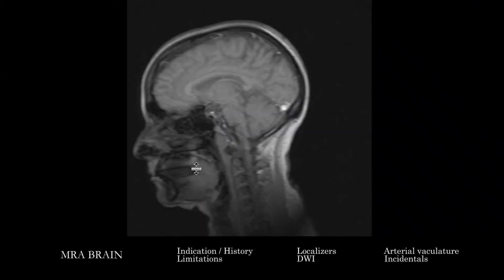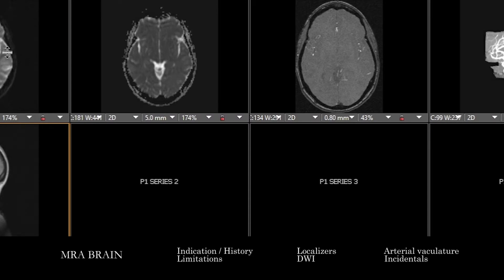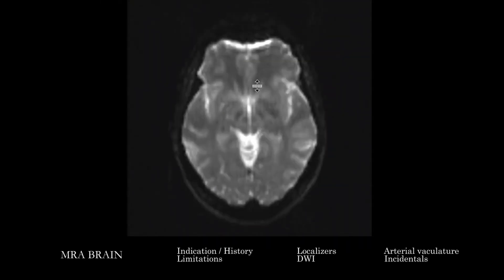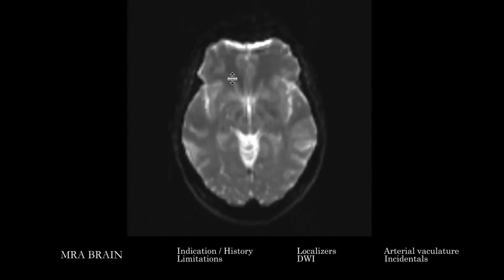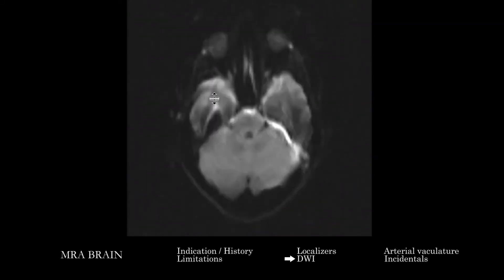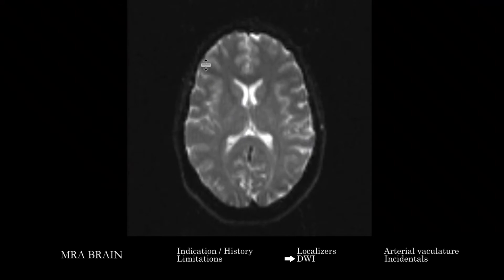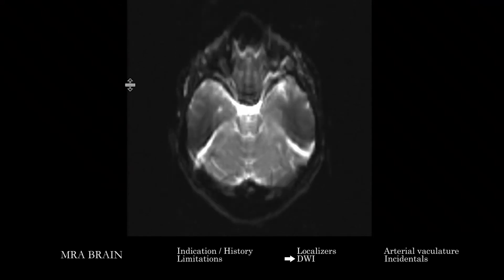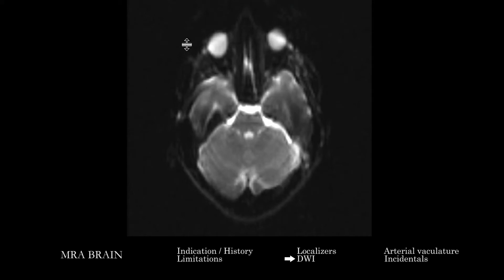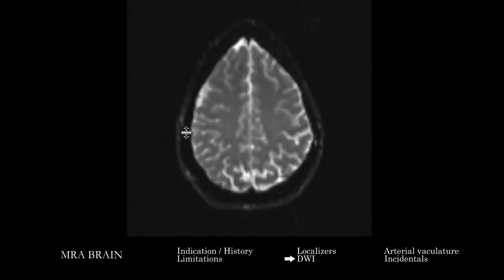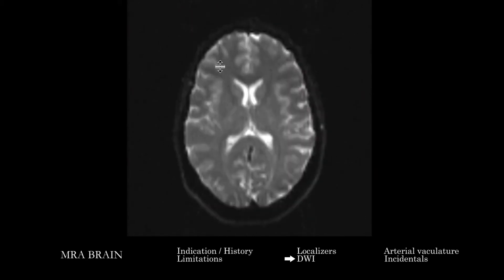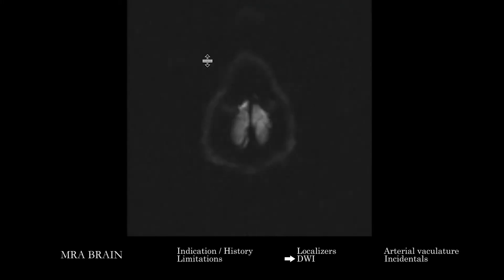Once you've looked at the localizers, before moving to the angiographic vascular-focused images, go through the DWI images provided. Here's the B0. Remember that the B0 — if we don't have SWI images and the MRA brain is the only thing being done — can be used as a kind of 'poor man's susceptibility image,' a suboptimal susceptibility-weighted surrogate if you need to assess any susceptibility or blood product.